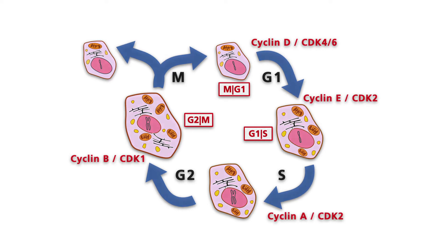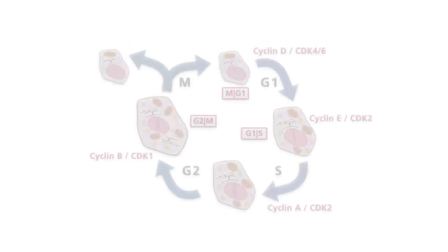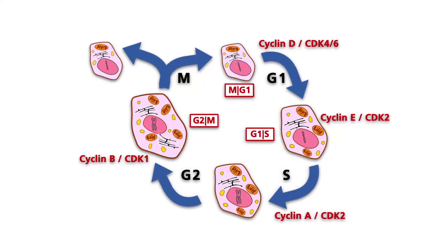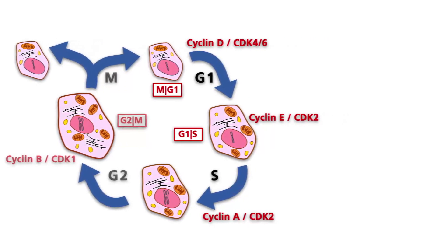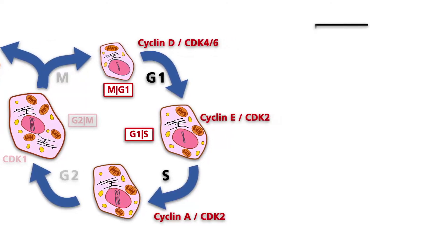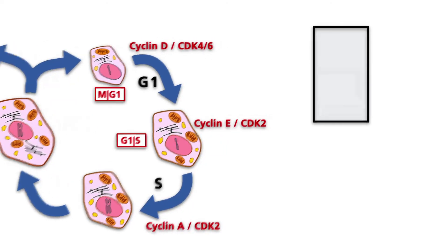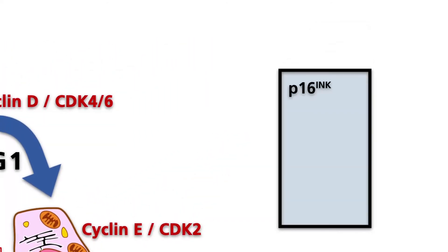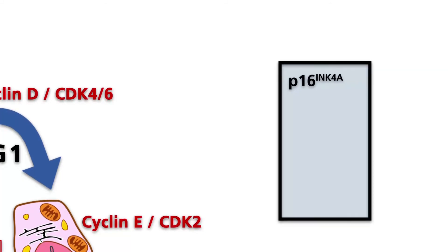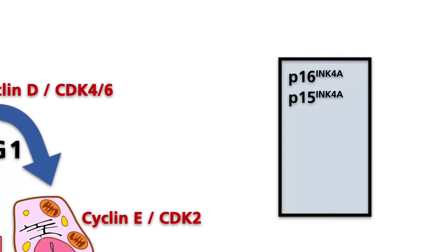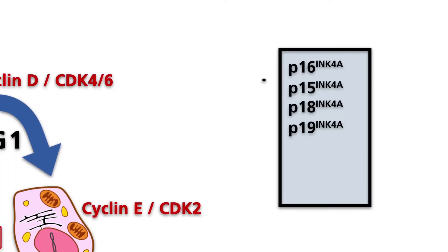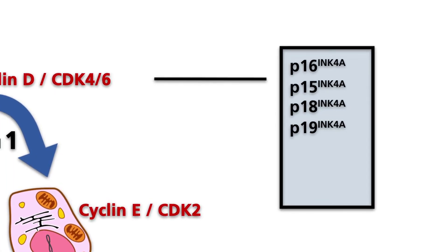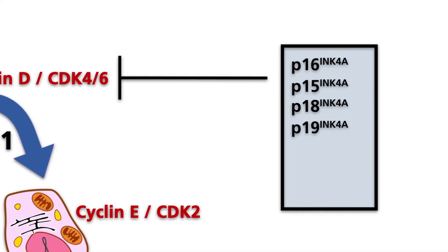CDK inhibitors can be seen as the brackets of the cell cycle. To date, seven major CDK inhibitors are known, and these can be divided into two different functional groups. First, P16-INK4A, P15-INK4A, P18-INK4A, and P19-INK4A are inhibitors of the INK4 group and are able to block kinases of the CDK4 family.